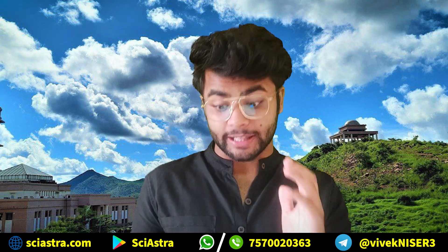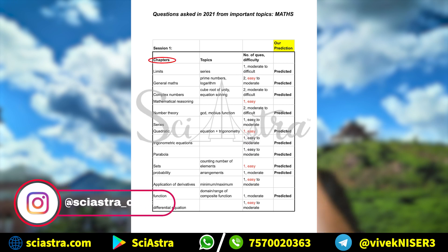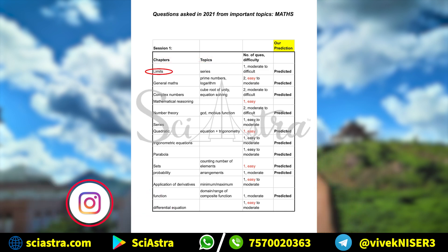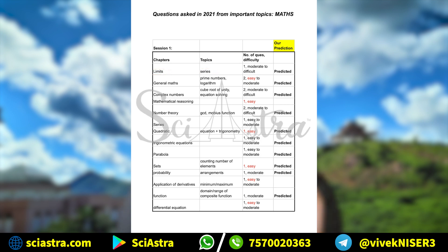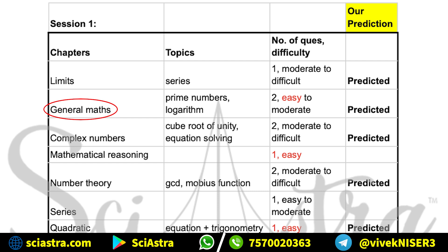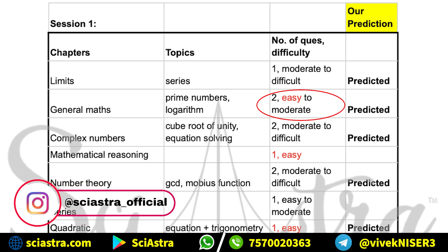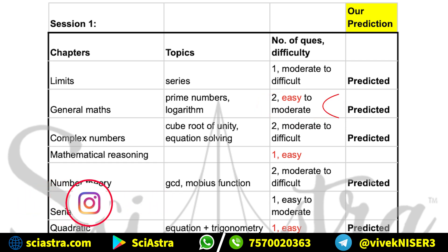Now in this PDF, in session one, you can first see the important chapters, then you can see the topics from where questions came in that chapter. For example, in limits, the topic from which the question came was series, and one question was asked at a moderate to difficult level, and it was already predicted in our previous video. Then for general math, questions were asked from prime numbers and logarithm — two questions came at easy to moderate level, and it was also already predicted.